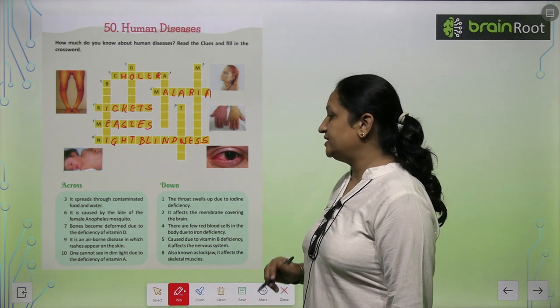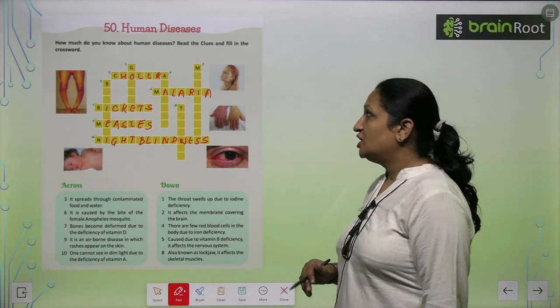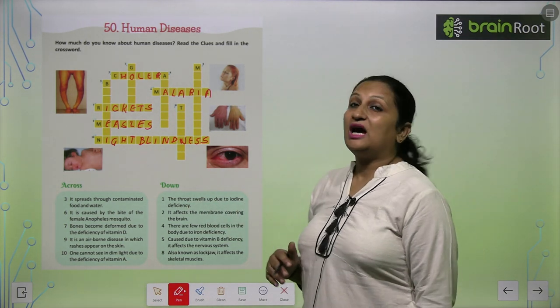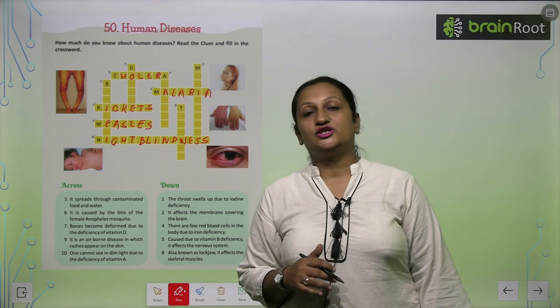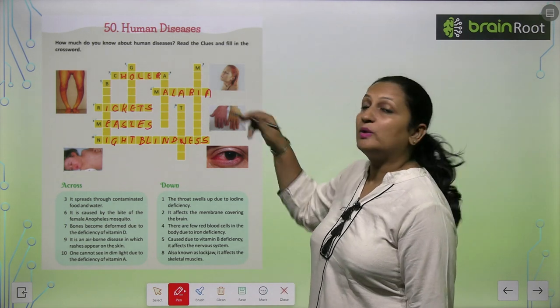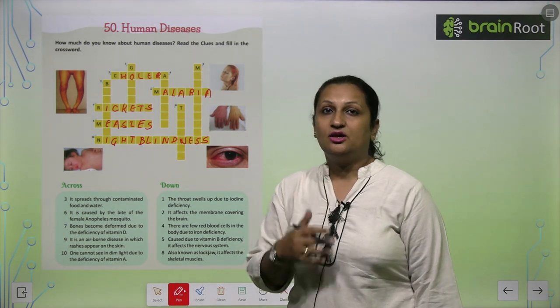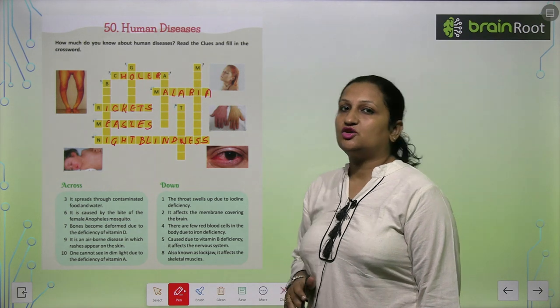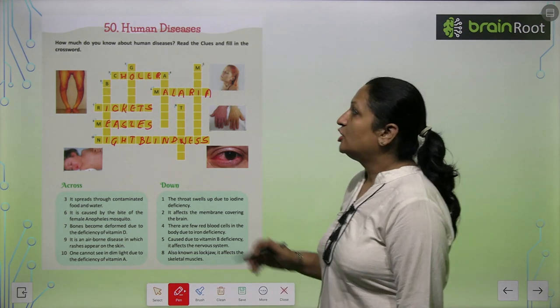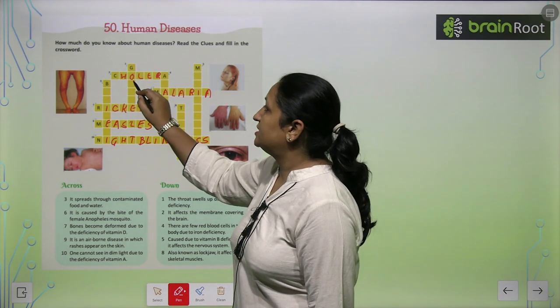Now see the down clues. See the first one: The throat swells up due to iodine deficiency. When there is iodine deficiency in the body, swelling appears in the throat — a ring forms. And that disease is called Goiter.